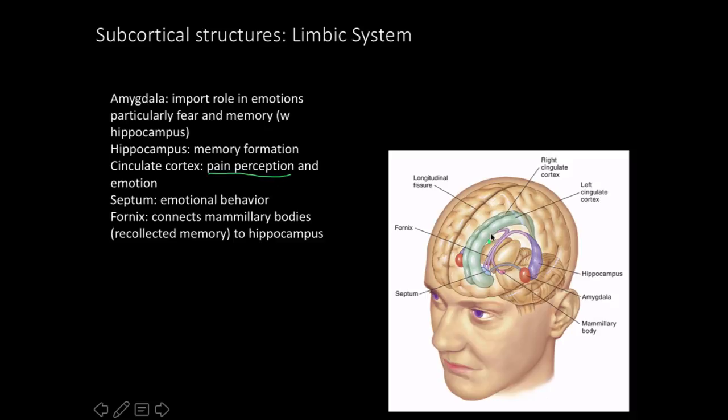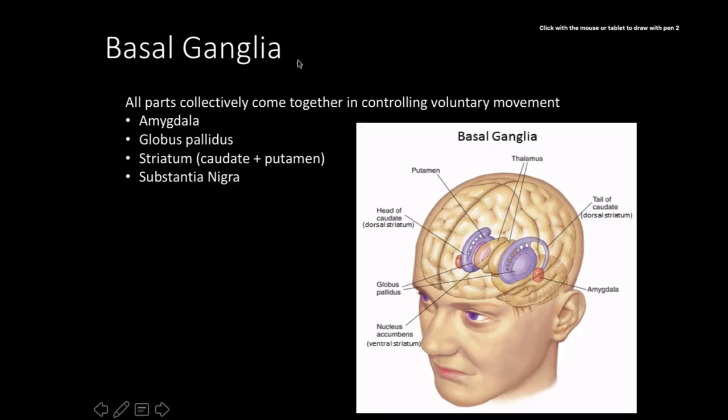A diagram identifies the key limbic structures: the fornix (shown in purple), the hippocampus (supposedly seahorse-shaped), the amygdala, the mammillary bodies, the septum, and the left and right cingulate cortex. The basal ganglia collectively play a role in controlling voluntary movement.